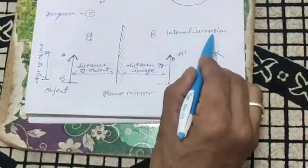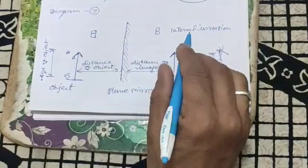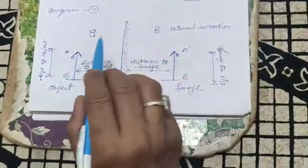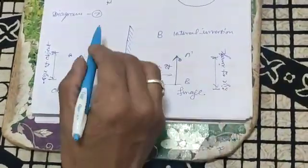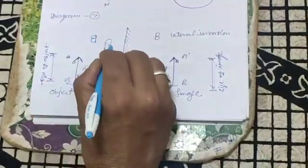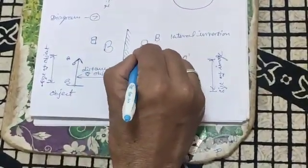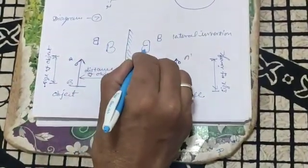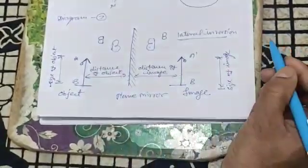There is a lateral inversion that appears, means right hand side converted into left hand side and the left hand side converted into right hand side. If we write B in front of mirror then it appears like this. Right hand side converted into left hand side. This is called lateral inversion.